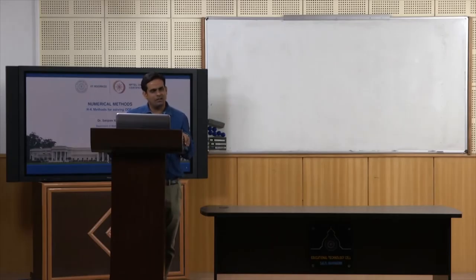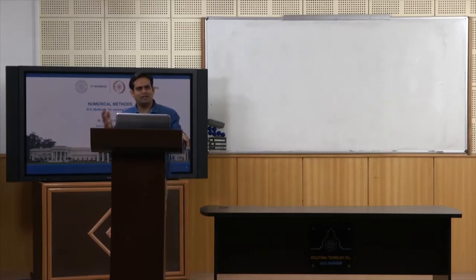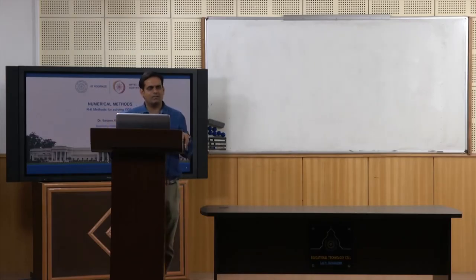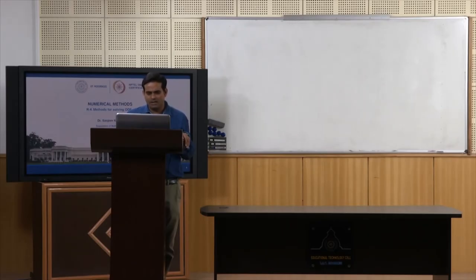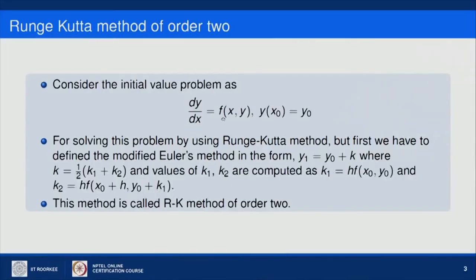First of all I will explain the RK method of order 2 and then I will tell you how we can generalize it to any order. Consider the initial value problem: dy/dx = f(x, y) with initial condition y(x₀) = y₀.